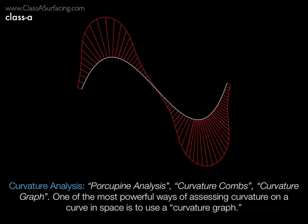Though the porcupine analysis is purely used for curvilinear elements in space, it can also be used to evaluate surfaces by using an intersection plane. Each comb on a curvature analysis graph represents an inverse magnification of the radius at that point — i.e., the longer the comb, the smaller the radius.